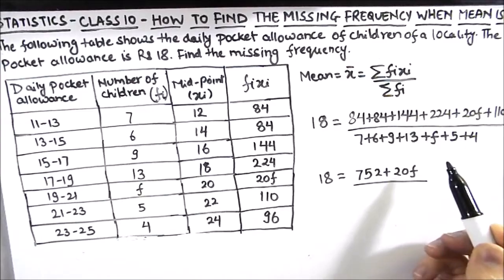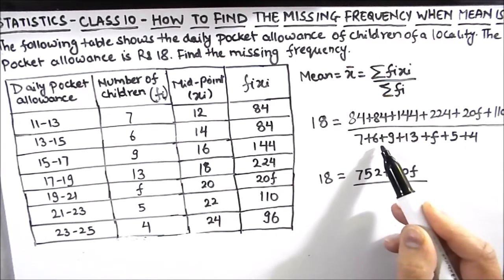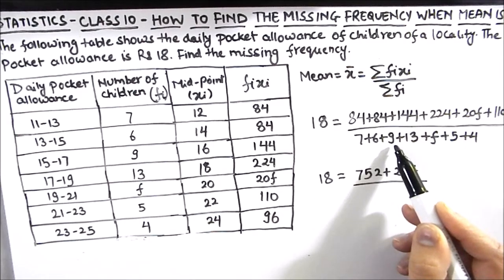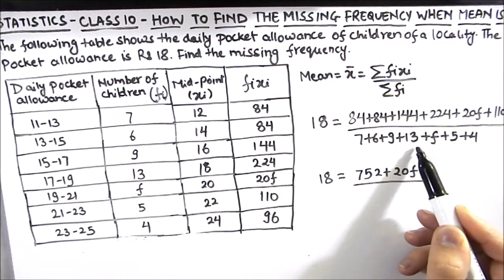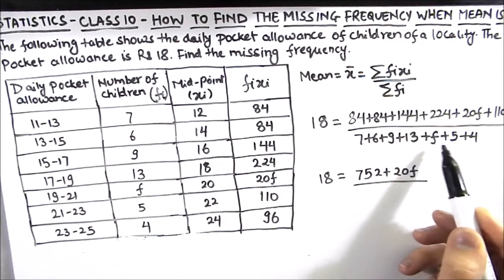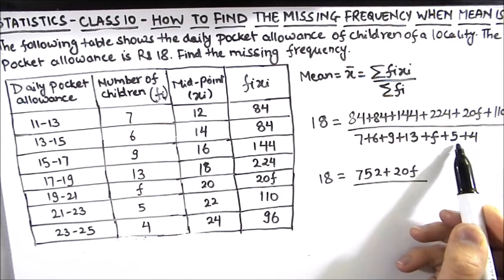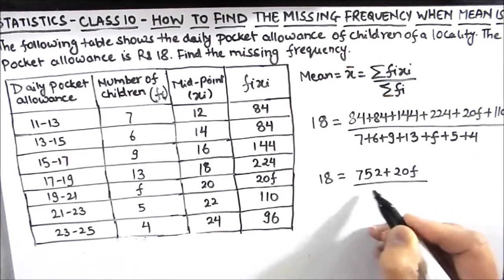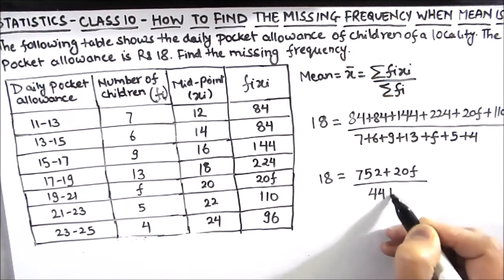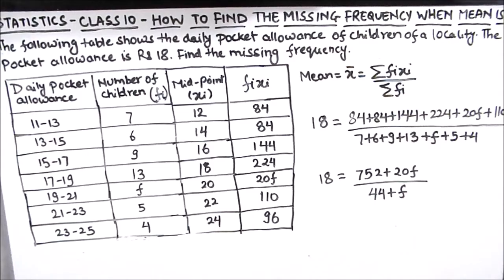And the denominator we can add easily: 7 plus 6 is 13, 13 plus 9 is 22, 22 plus 13 is 35, 35 plus 5 is 40, 40 plus 4 is 44. So this is 44 plus f.